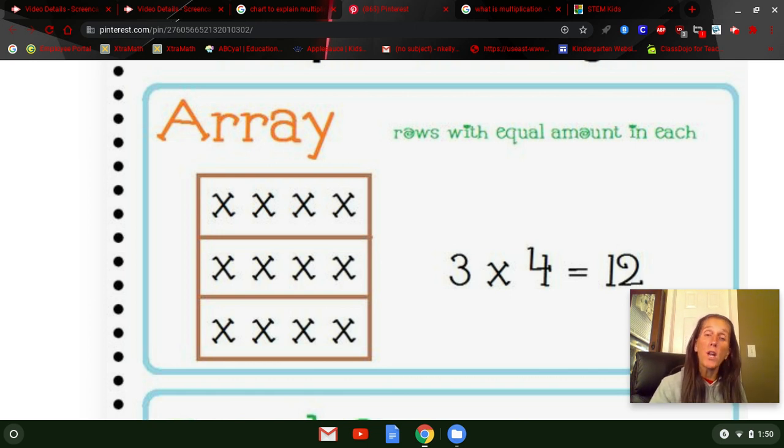So if we wanted to add, we simply could do four plus four plus four, and we would find the answer to be 12 if we added up four three times.